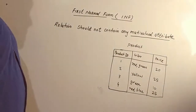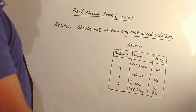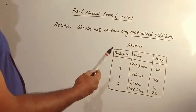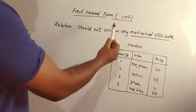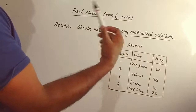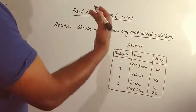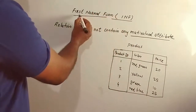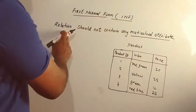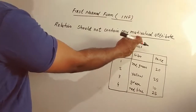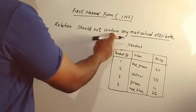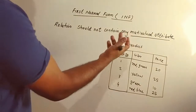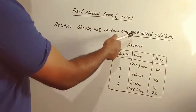Hello friends, welcome to DKK. I'm going to talk to you about the first normal form. There is a concept called Multi-Valued Attributes — this is called Multi-Valued Attributes.